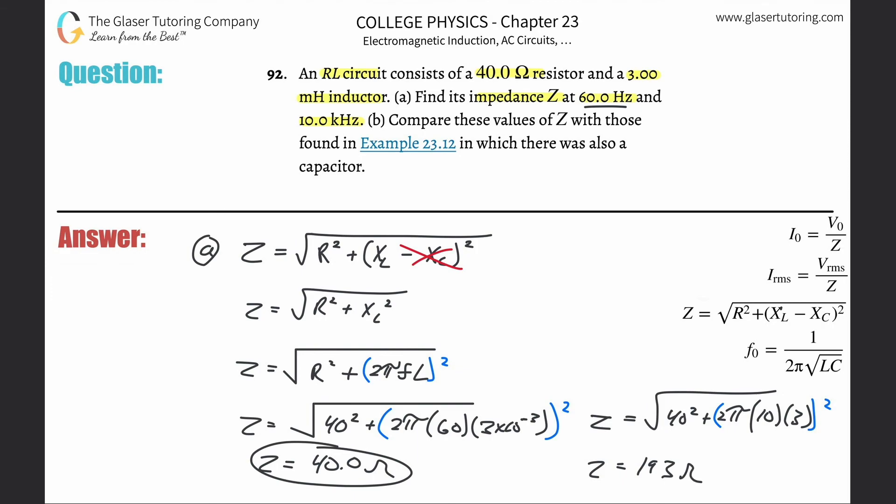And the units here, by the way, are ohms. They're ohms again. And the reason being is because, well, resistance is in ohms, reactive capacitance and reactive inductance is in ohms, and you're adding them together and then you're square rooting it. So all these have like ohm squared and then you square root it, so it's just ohm. But those would be the impedance values at those particular frequencies.